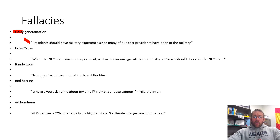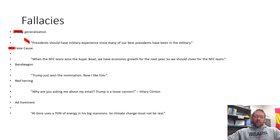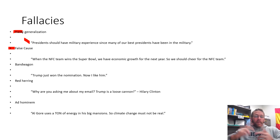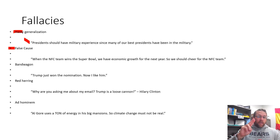False cause: you may have heard 'correlation does not mean causation.' To be correlated means two variables are trending in the same direction — both things are happening at the same time. Causation means one thing is actually causing the other to happen. Just because two things trend together doesn't mean they're causing each other — it might be coincidental, or there may be a third variable causing both to move in the same direction.